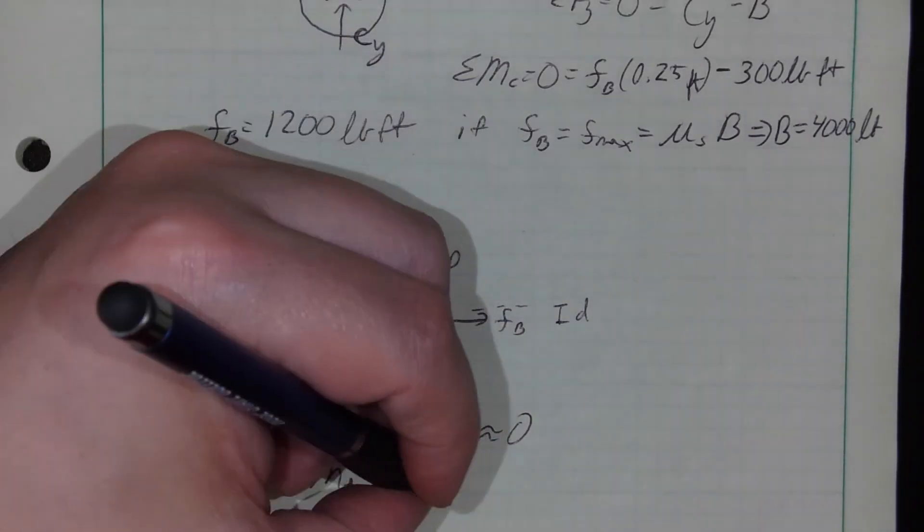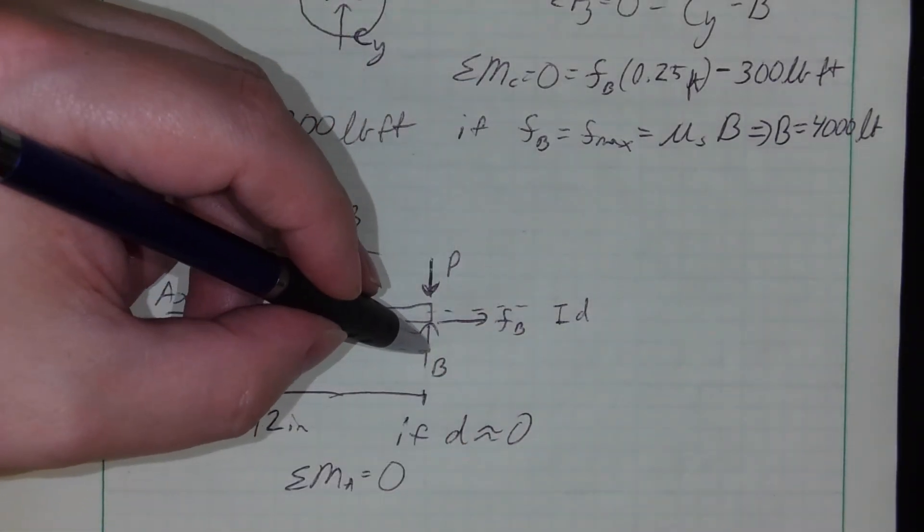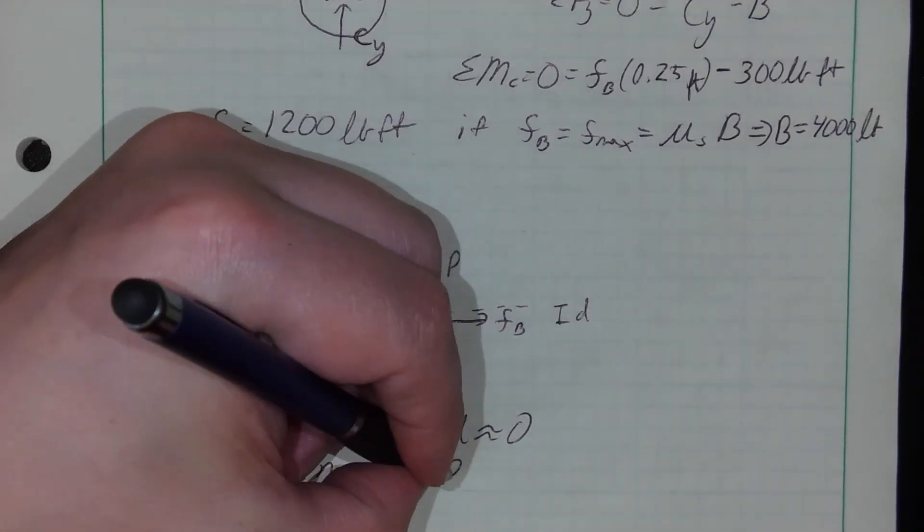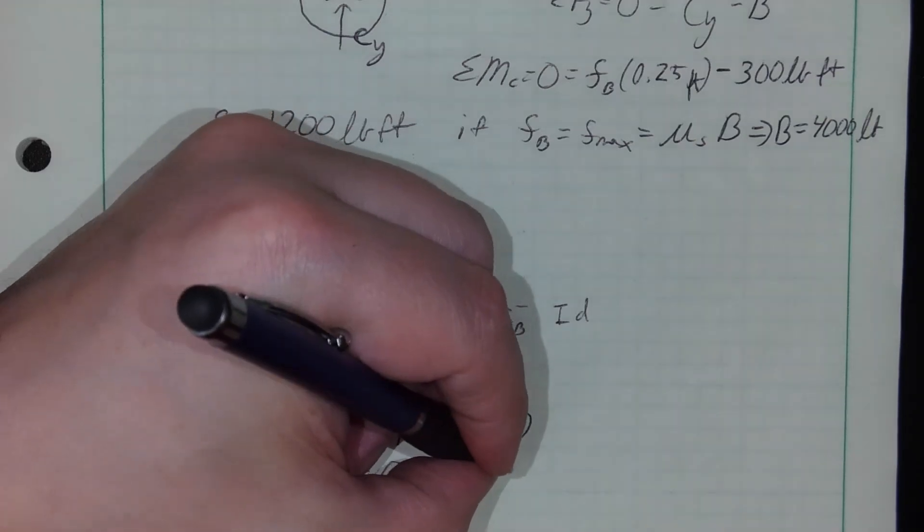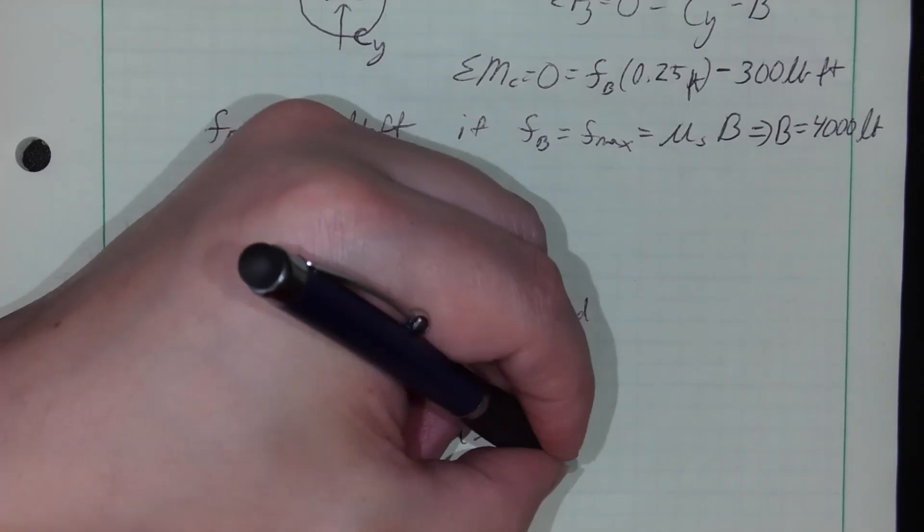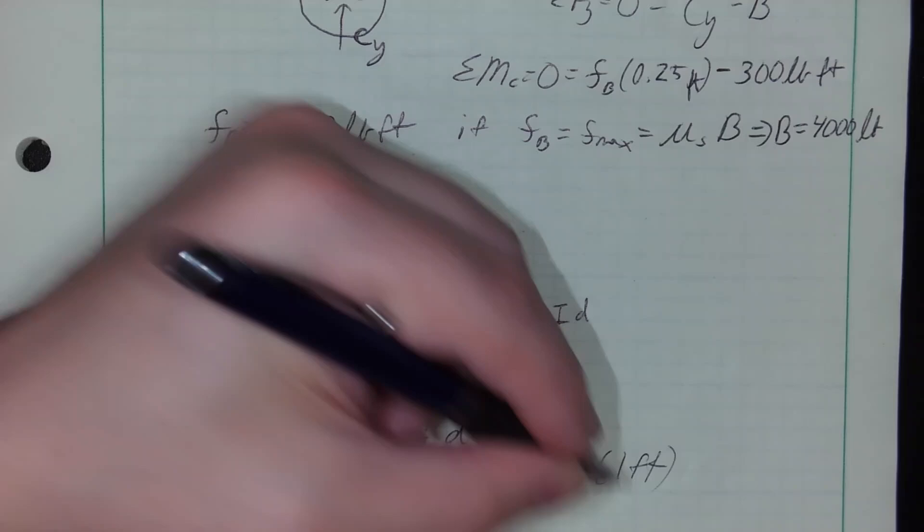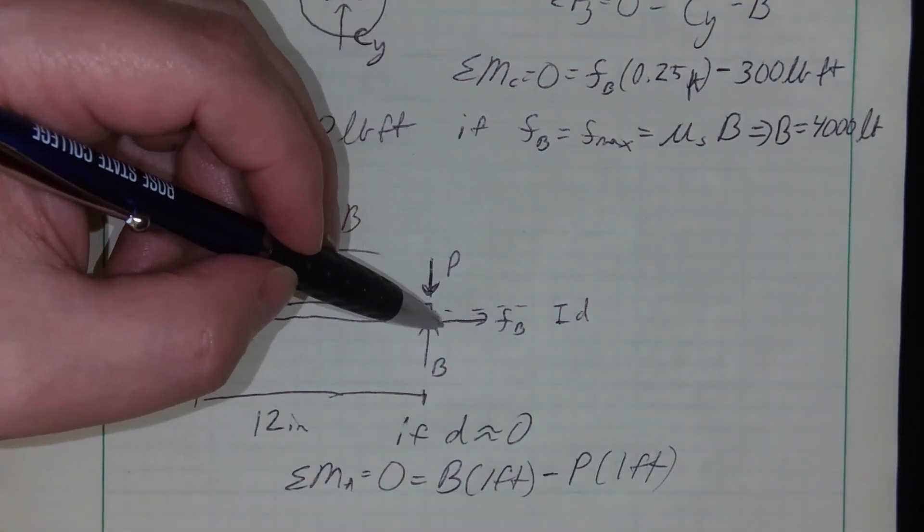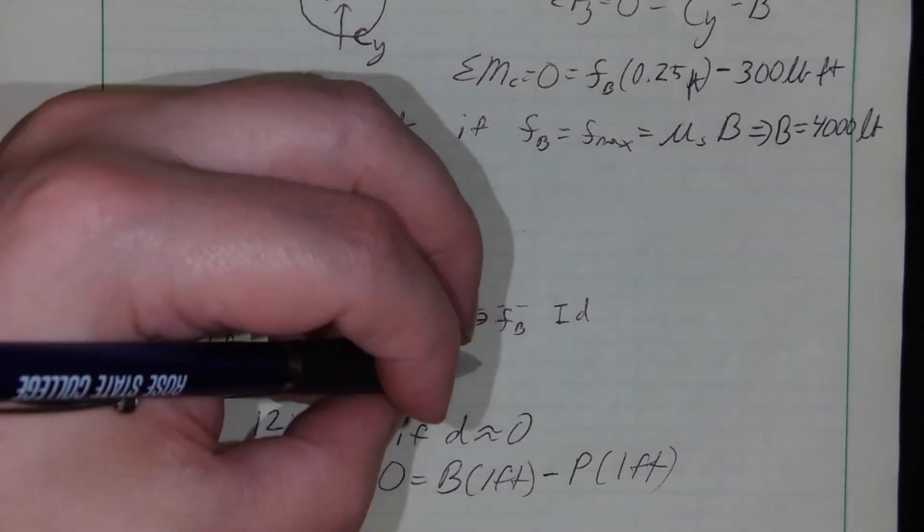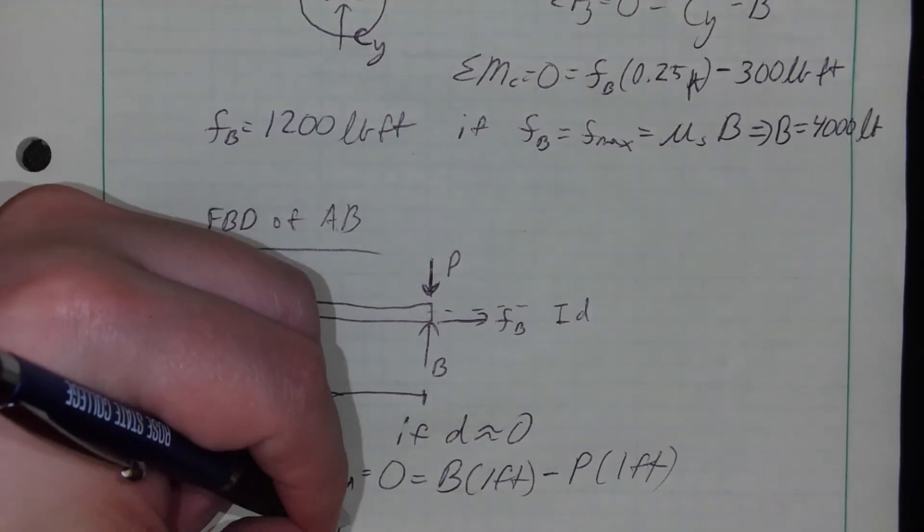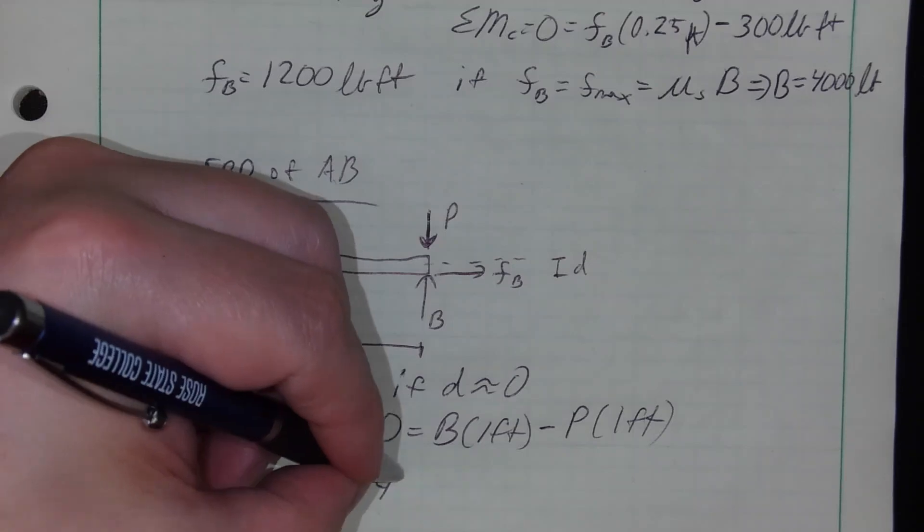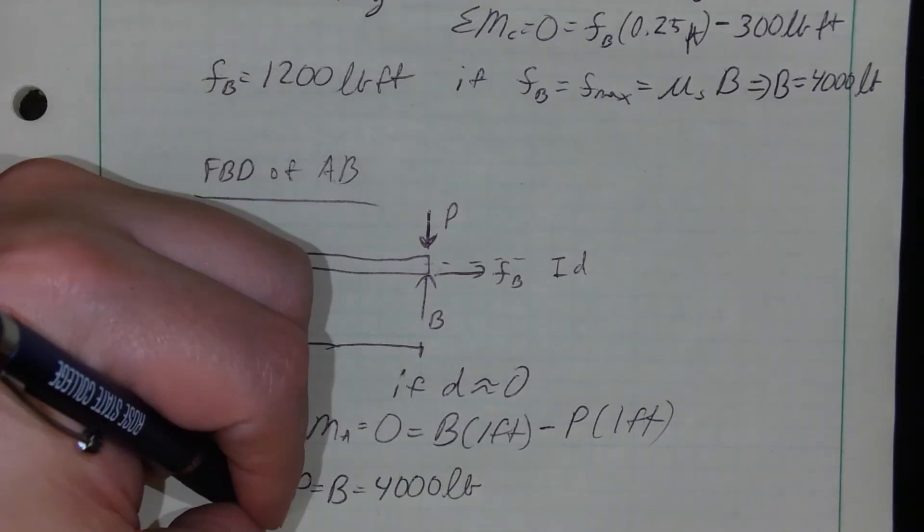And if we're saying D is essentially negligible, then what I've got is I've got B applying a counterclockwise moment, B at a distance of 12 inches or one foot if you like, and I've got force P applying a clockwise motion out at a lever arm of one foot. And assuming that there's not much kind of spinning torque so to speak here, that this is a very thin beam, negligible thickness, then P is equal to B.